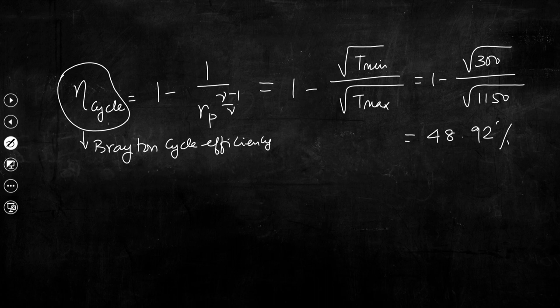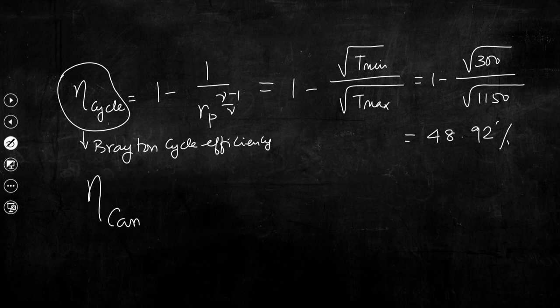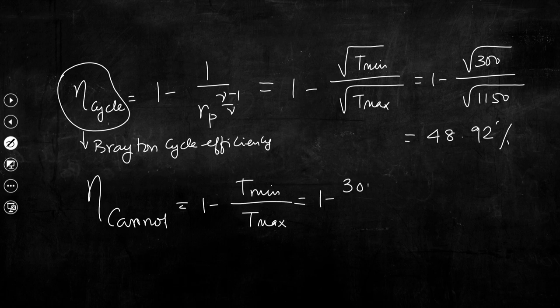Now we establish the Carnot efficiency. If we consider the same 2 temperature limits for a Carnot cycle, then η_Carnot = 1 − T_min/T_max = 1 − 300/1150 = 73.91%.